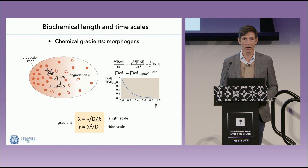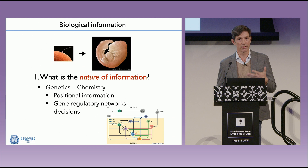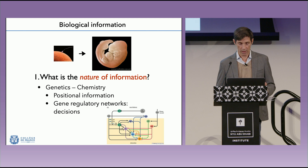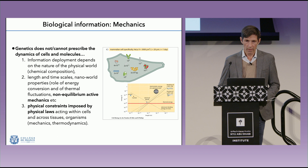Yes — genetics and its correlate chemistry provide positional information and layout patterns. Because genes produce transcription factors that regulate other genes, there exist more or less complex gene regulatory networks that allow the system to endow cells with particular decisions as to what they will become — a neuron, a skin cell, or a muscle cell. That is all very good and nice, but...